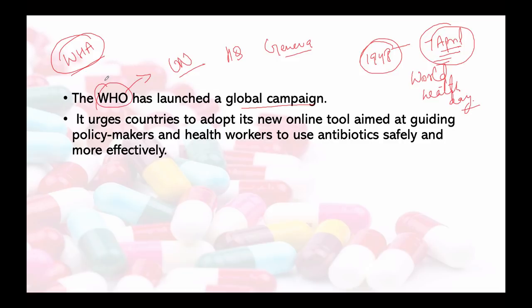Recently, a high-level summit on digital health for sustainable development — the Fourth Global Digital Health Partnership Summit — was held in Delhi. Now let's talk about today's lecture. WHO launched a global campaign against antibiotics misuse, and as part of this campaign there is an online tool. In this campaign, the aim is to increase 60% of antibiotic use in the narrow spectrum.